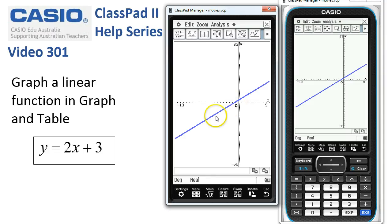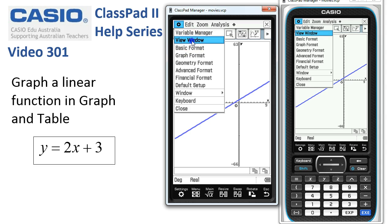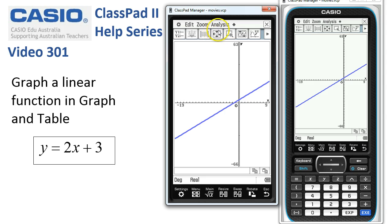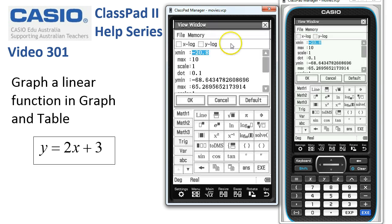If I want to manually adjust the screen settings, I can tap onto settings and choose the view window, or we can tap onto this icon here, and this opens up the view window as well. And then we can manually set the scales.